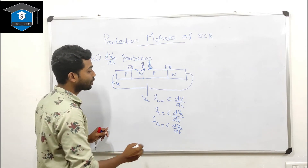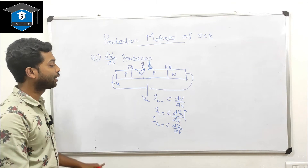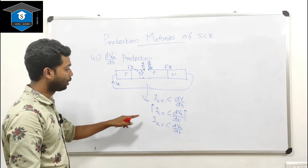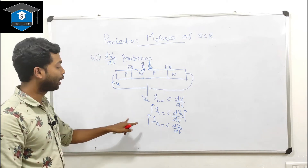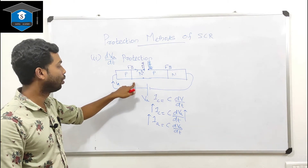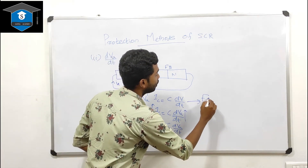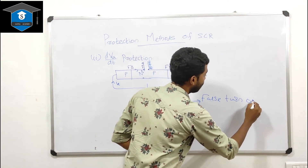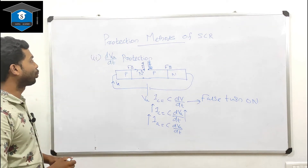If dva/dt is high, then ic is also high. If the anode current ia increases, the SCR turns on. This causes a false turn-on of the Silicon Controlled Rectifier.